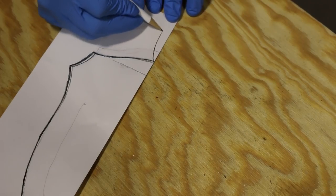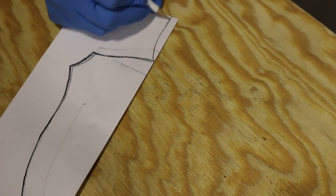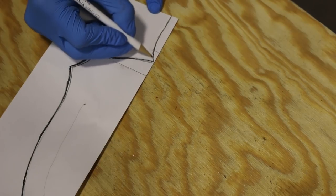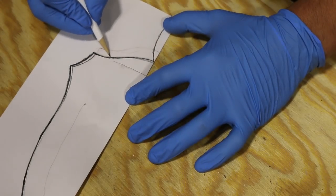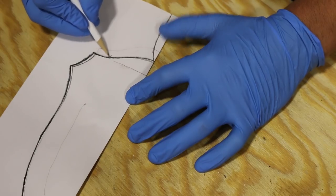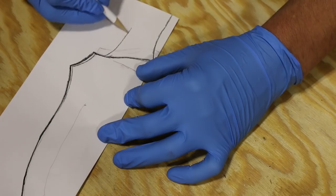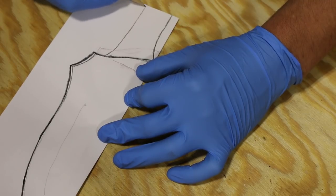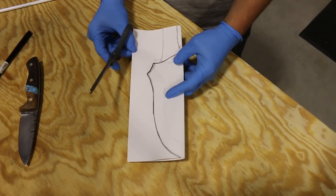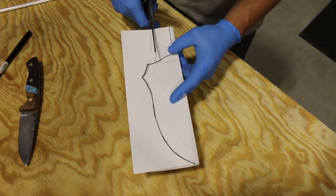Next up is to sketch the belt loop. Now that it's drawn up, I'll go ahead and cut the paper out.